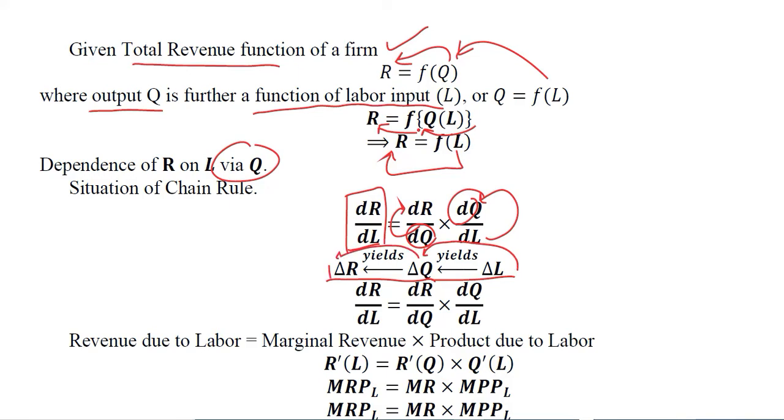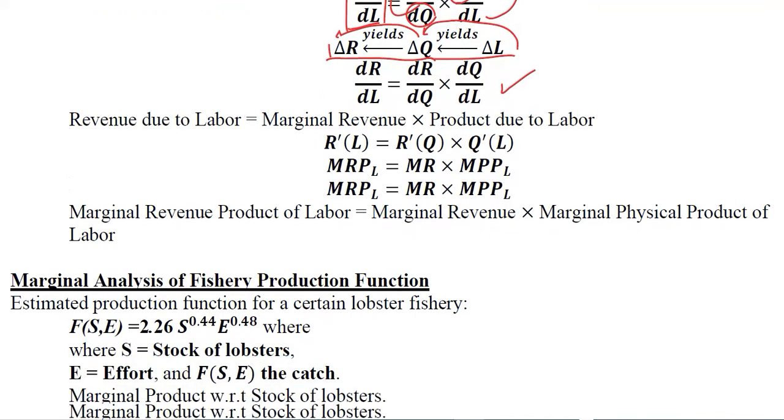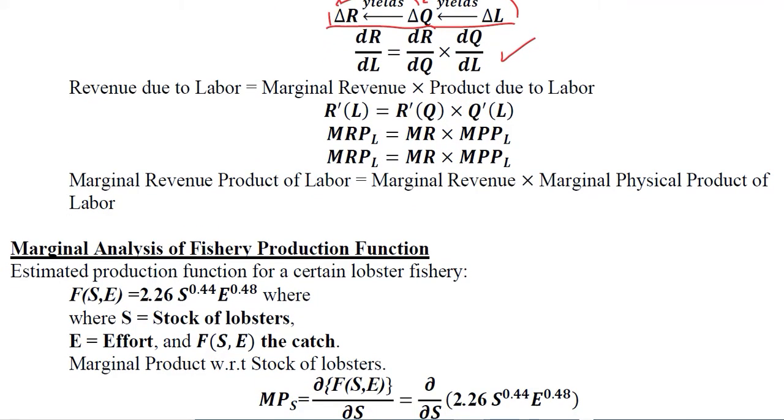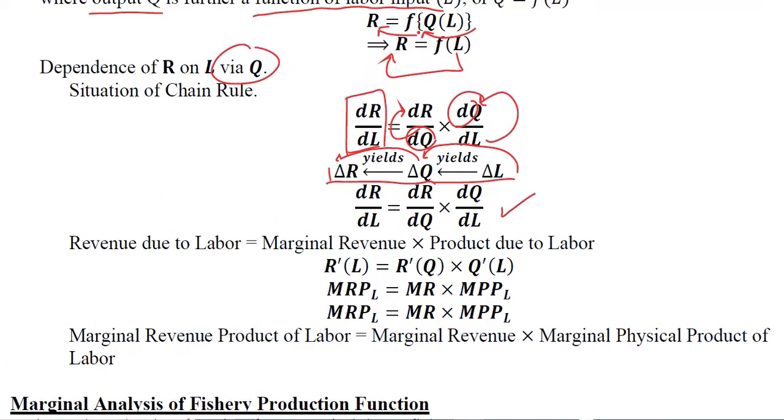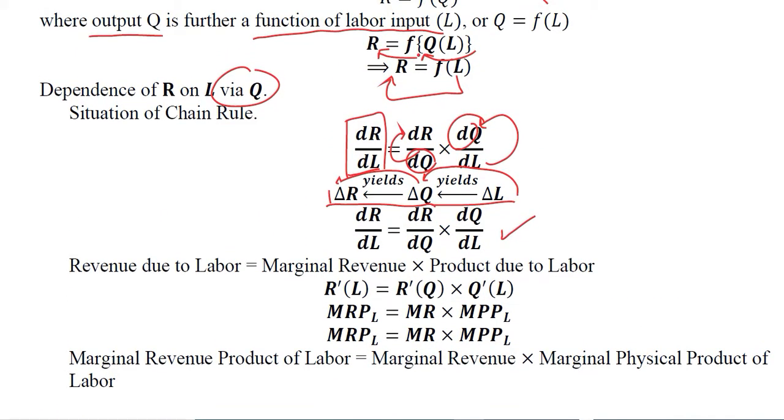This is the same thing explained in a differential way: labor causes more output and more output earns us more revenue. This is the chain rule being applied on this situation. Now let us apply another formula here, which is the conversion of the chain rule that we have studied.